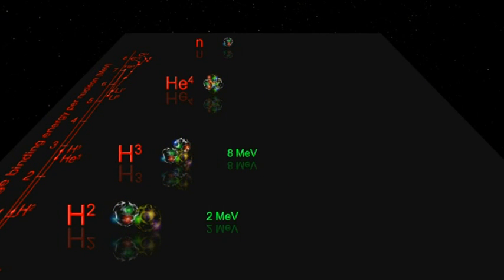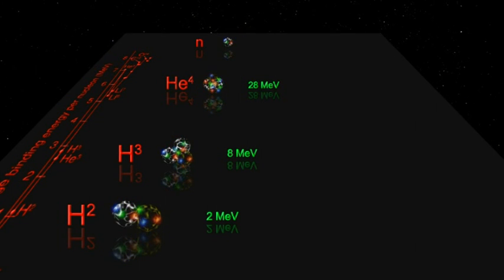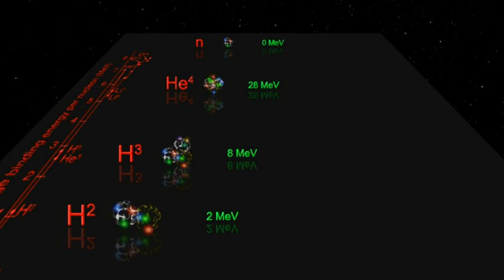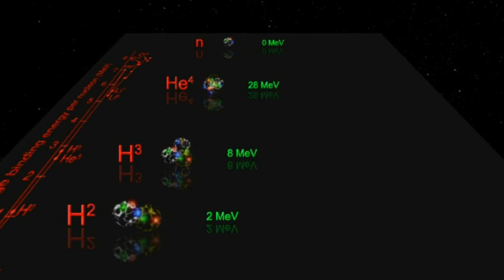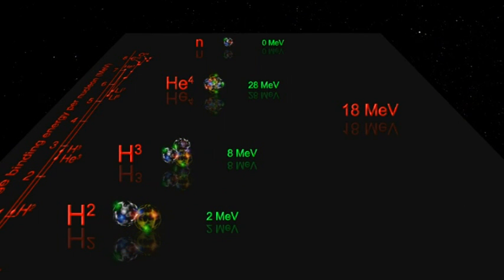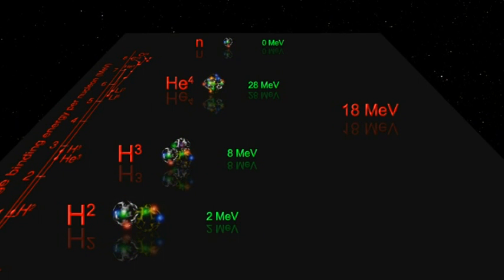The binding energy for helium is 28 MeV, and the free neutron has zero binding energy. Subtracting the 10 MeV from the 28 MeV reveals that every time this fusion happens, we liberate 18 MeV of energy. And that's pretty good.